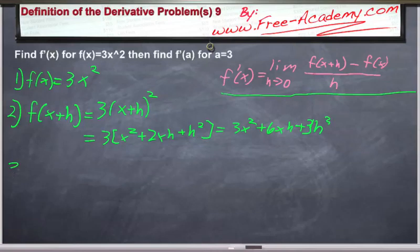Now step 3: we plug things into our formula for the derivative. f(x+h) is 3x² + 6xh + 3h². This will be minus f(x), which is 3x². And that's all divided by h.